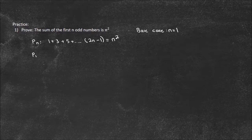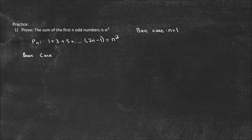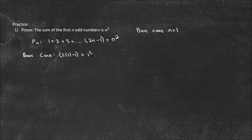So p of 1 — this is the base case. You try to show it's true when n equals 1. Is 2 times 1 minus 1 equal to 1 squared? Well, 2 minus 1 is 1, and 1 squared is 1. That is true. So the base case holds, and p of 1 is established.